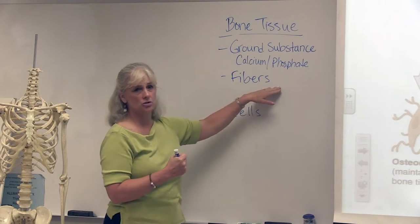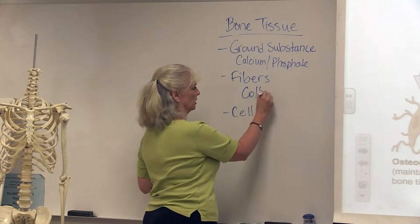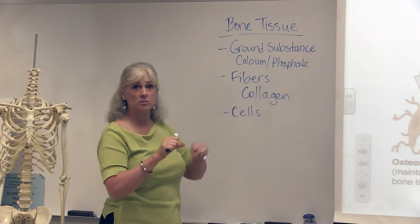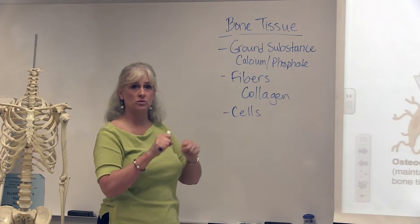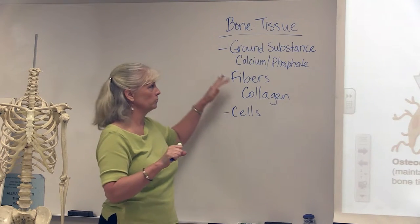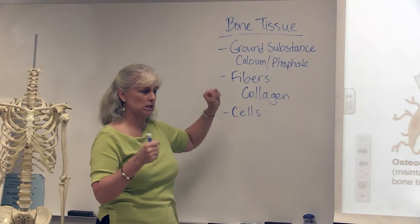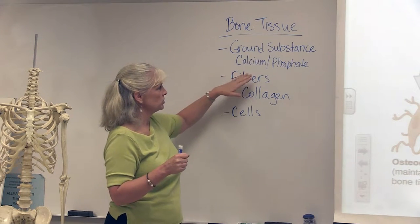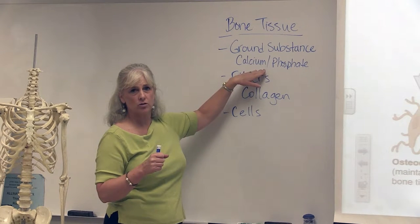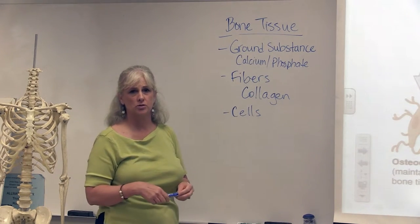The fibers of the bone, as you recall, are collagen, and those fibers actually make the bone more flexible so that it doesn't crush all the time. Together, this makes up the strength of the bone tissue. As we get older, we get more of the ground substance and less of the collagen, which is what can cause some osteoporosis.